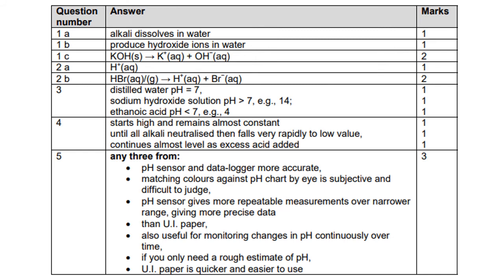Acids all produce hydrogen ions in solution. For a new acid — hydrobromic acid, HBr — it has very similar bonding and structure to hydrochloric acid, so hydrogen ions and bromide ions are formed. If you weren't sure whether hydrogen bromide is aqueous or in a gas state before dissolving, that's fine — it's not very clear in the question in terms of state symbols.